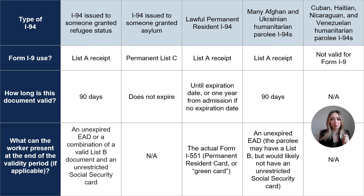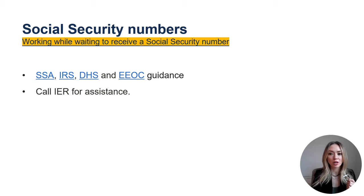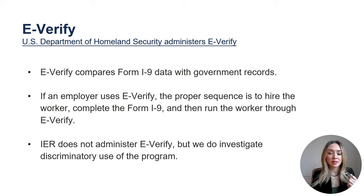If a worker has sufficient documentation to complete Section 2 of the Form I-9, an employer can hire the worker and the worker can begin work even if the worker has not yet received a Social Security number. The Social Security Administration, the Internal Revenue Service, USCIS, and the Equal Employment Opportunity Commission all provide guidance to employers on this matter, and IER can point you to that guidance. The U.S. Department of Homeland Security administers the E-Verify program. E-Verify compares Form I-9 data with government records. If an employer uses E-Verify, the proper sequence is to hire the worker, complete the Form I-9, and then run the worker through E-Verify. IER does not administer E-Verify but does investigate discriminatory use of the program.